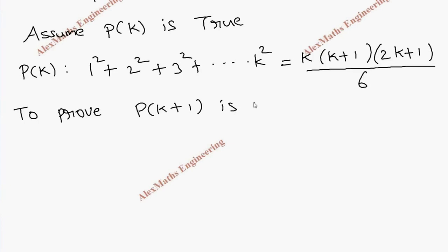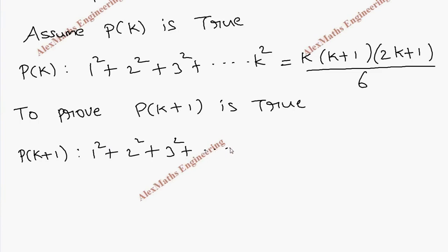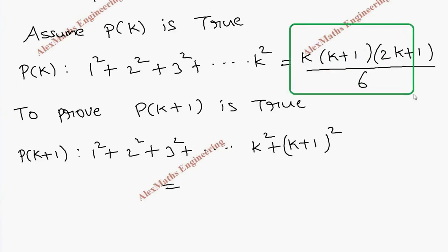As part of the proof we have to prove that P(k+1) is also true. So we write the expression for P(k+1), which is 1² + 2² + 3² + ... + k² + (k+1)², and this equals the formula with k replaced by k+1.